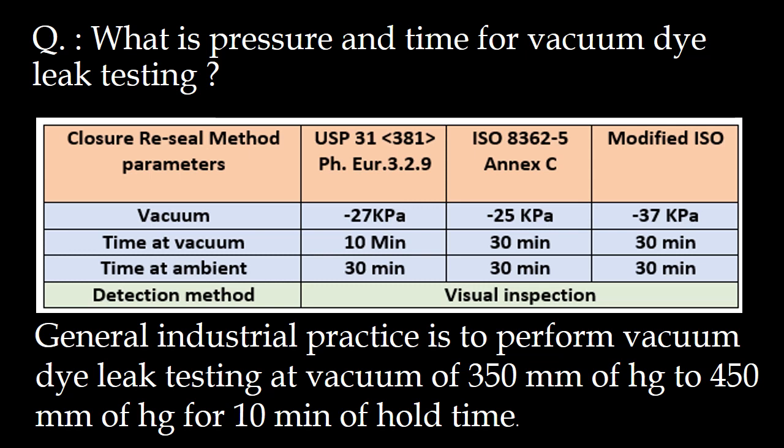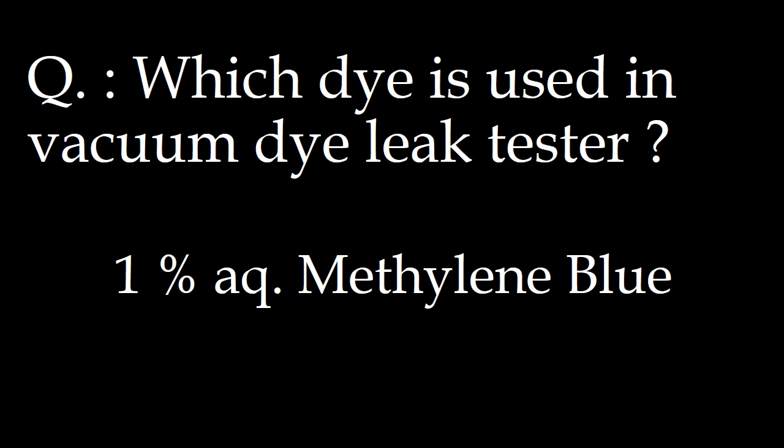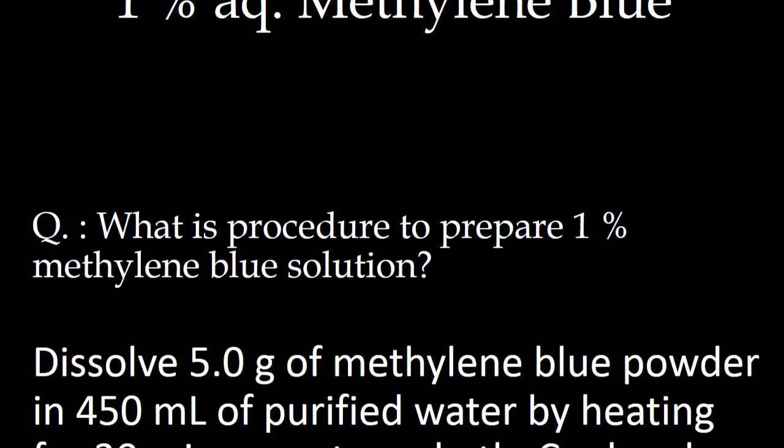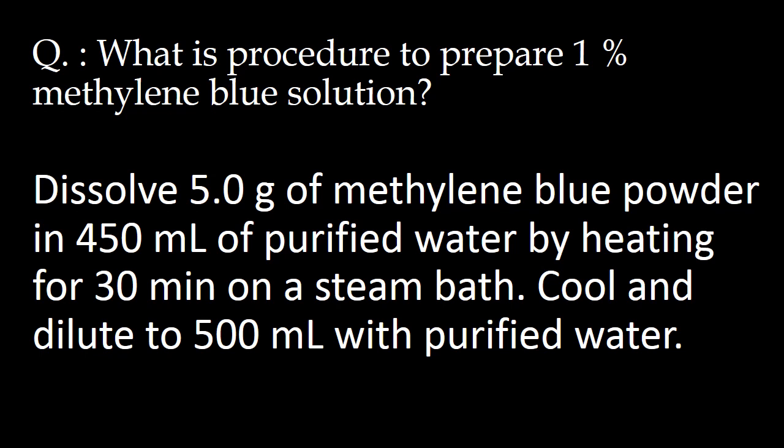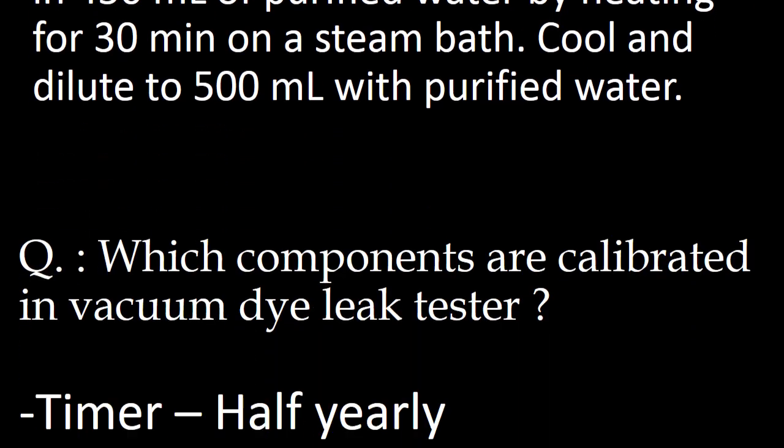Next question: which dye is used for vacuum dye leak testing? Answer: 1% aqueous methylene blue dye is used. Next question: what is the procedure to prepare 1% methylene blue solution? To prepare it, dissolve 5 grams of methylene blue powder in 450 ml of purified water by heating for 30 minutes on a steam bath. After that, cool and dilute the solution to 500 ml with purified water. You can multiply these quantities to get the required amount.